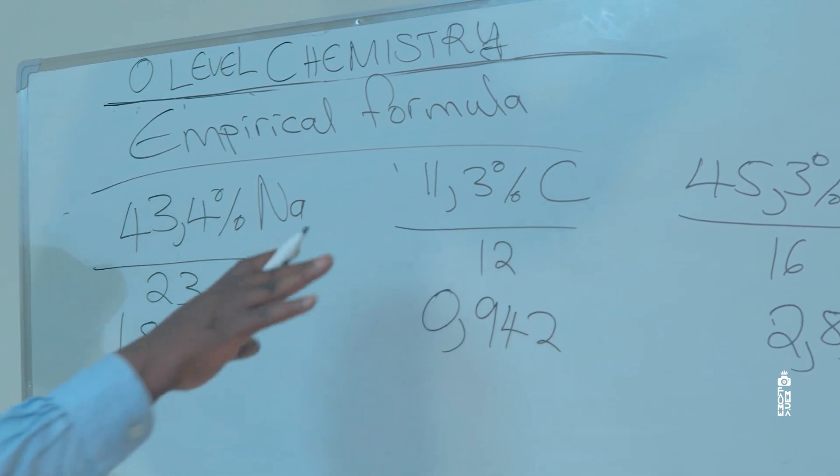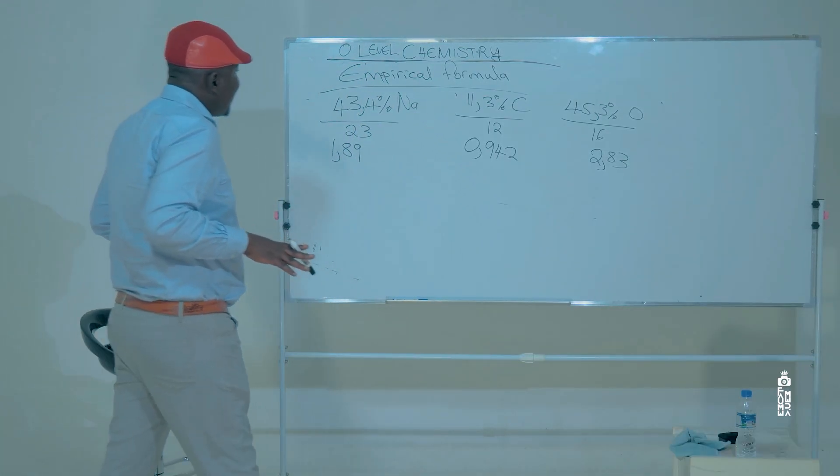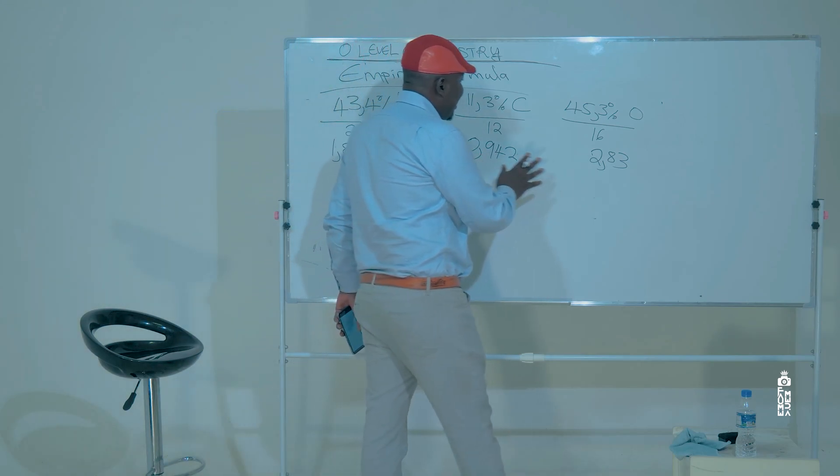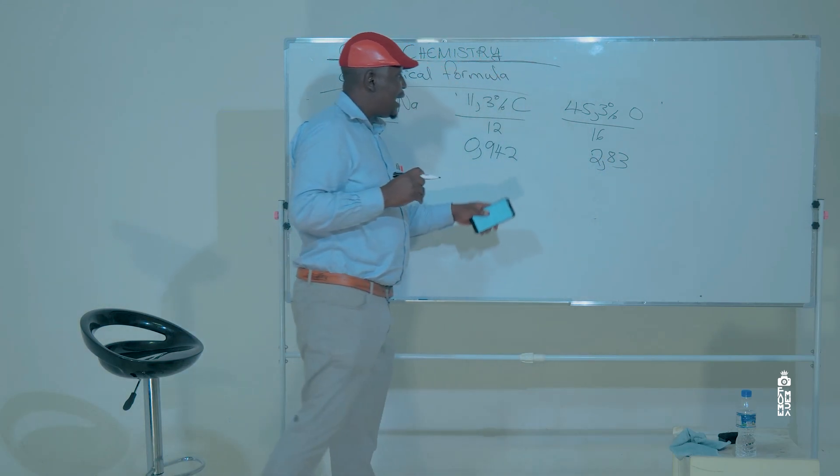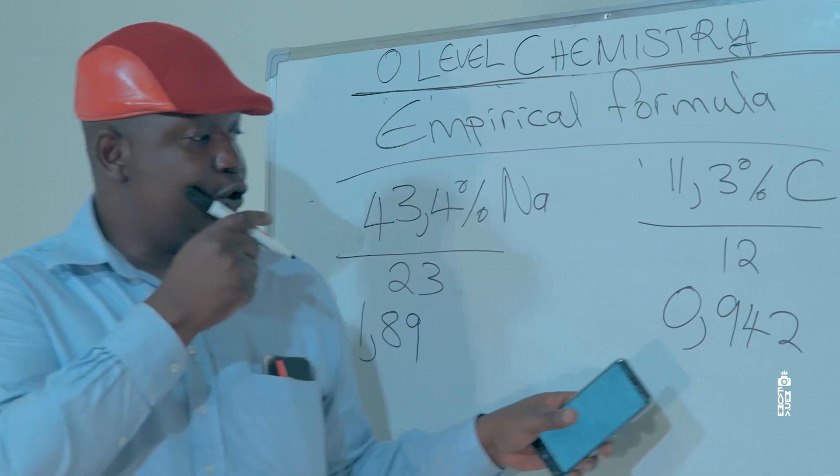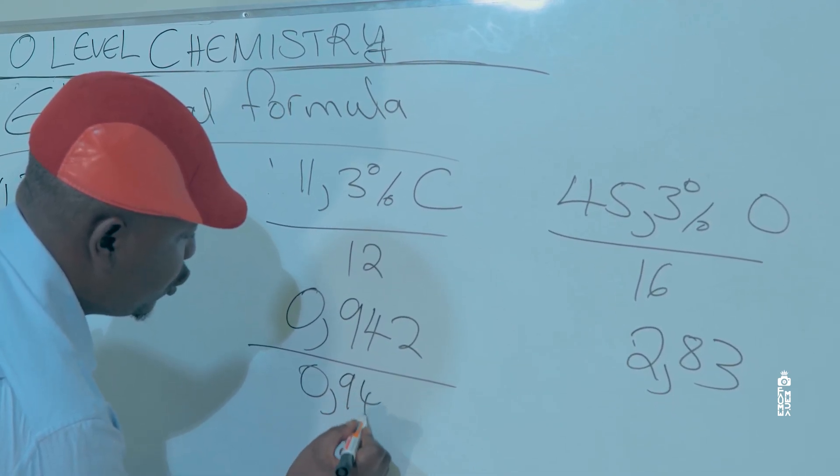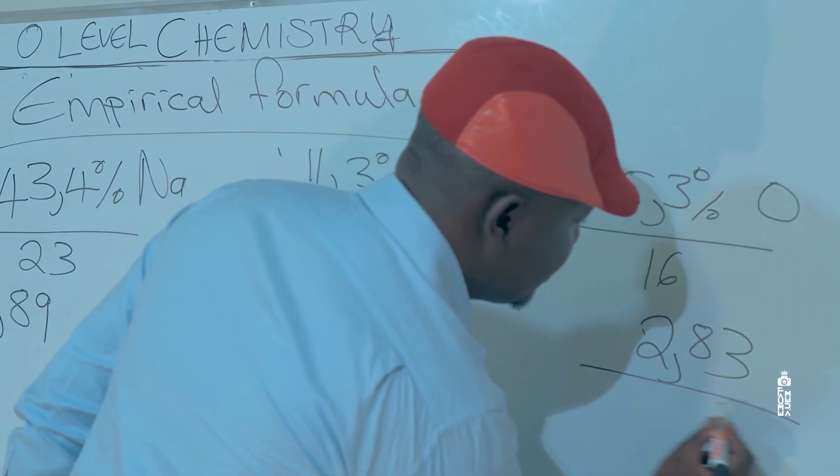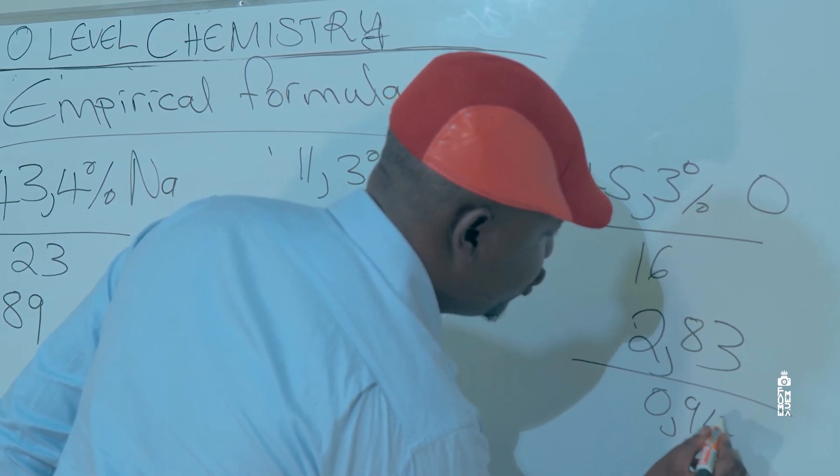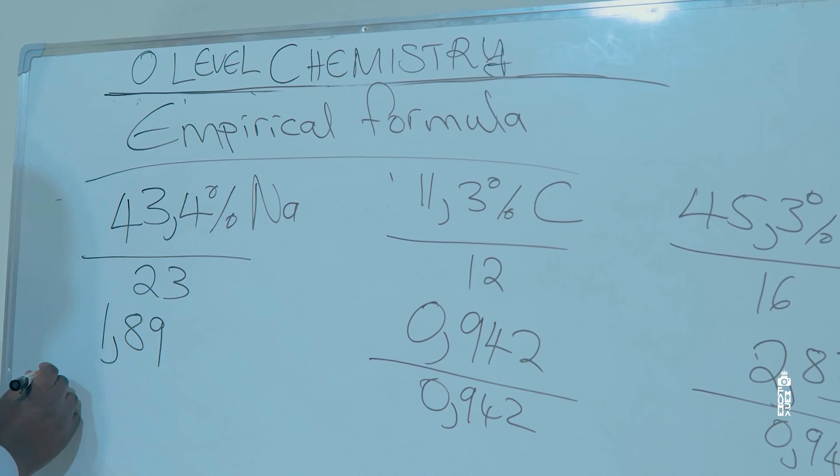So after getting these numbers, this is what we're going to do next: we are going to divide by the smallest number. The smallest number in this question is 0.942, so each and every number is going to be divided by 0.942 here, 0.942 on that side, and again 0.942 here.